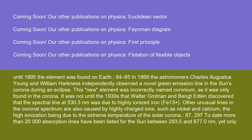In 1869, astronomers Charles Augustus Young and William Harkness independently observed a novel green emission line in the Sun's corona during an eclipse. This new element was incorrectly named coronium, as it was only found in the corona. It was not until the 1930s that Walter Grotrian and Bengt Edlén discovered that the spectral line at 530.3 nanometers was due to highly ionized iron, Fe 13+. Other unusual lines in the coronal spectrum are also caused by highly charged ions, such as nickel and calcium, the high ionization being due to the extreme temperature of the solar corona.